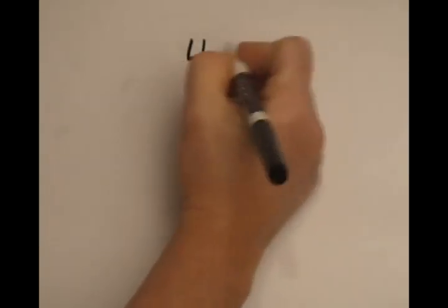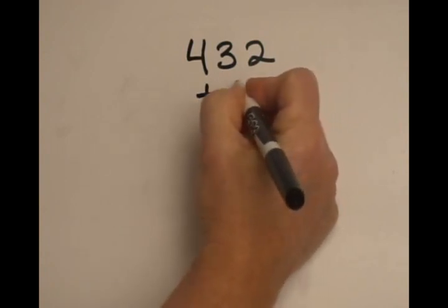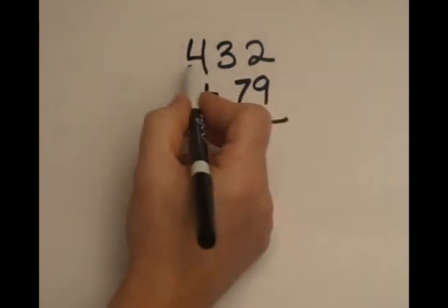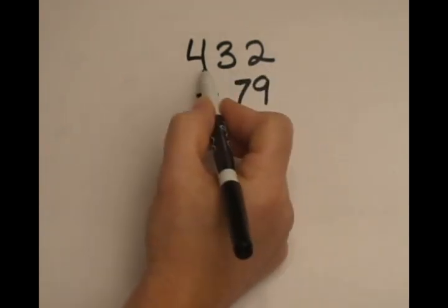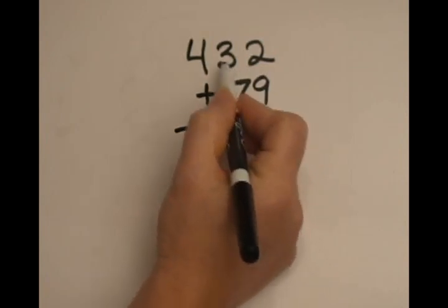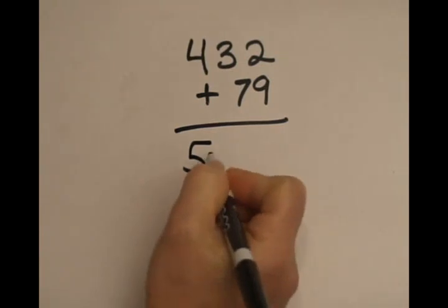Let's do another one. 432 plus 79. If I was going to do this in my head, 432 plus 79, I already see it's going to be a 500, because 79 looks like 80. 80 plus 30 something is already going to be more than 100. So I'm going to write down 500, and then I'm going to keep going.